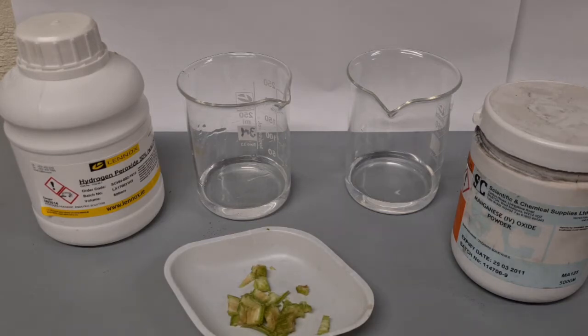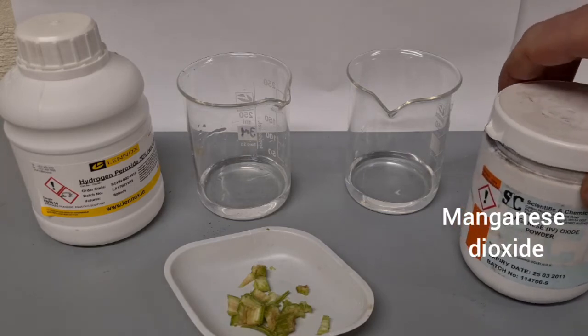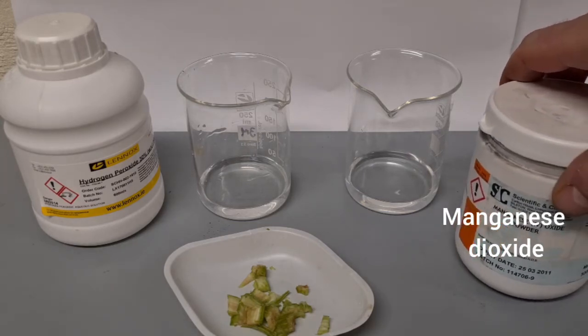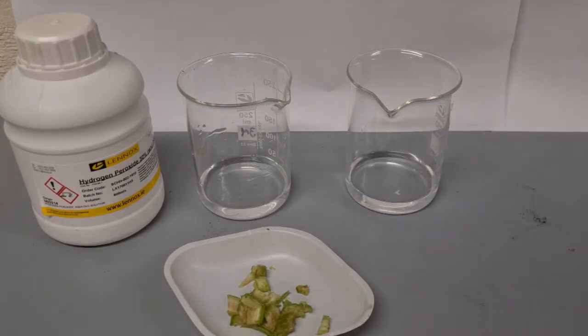An example of a catalyst that speeds up the breakdown of hydrogen peroxide is manganese dioxide. I'm going to add a small piece of manganese dioxide to one of the beakers of hydrogen peroxide.